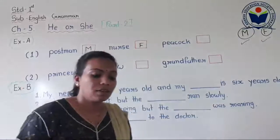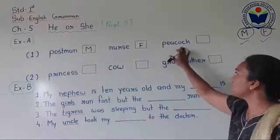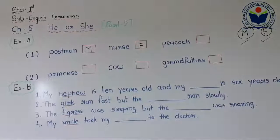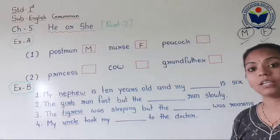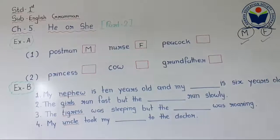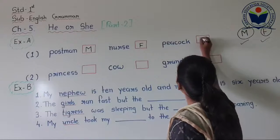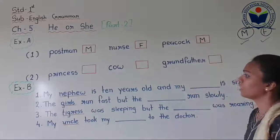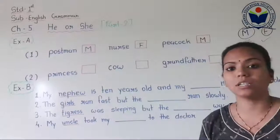We use nurse for female, so we have to write capital F here. Next, the third naming word is peacock — P-E-A-C-O-C-K. Can you tell me? The peacock naming word is used for an animal. Peacock is the male animal, so we will write capital M. Now look at the next page — page number 29.